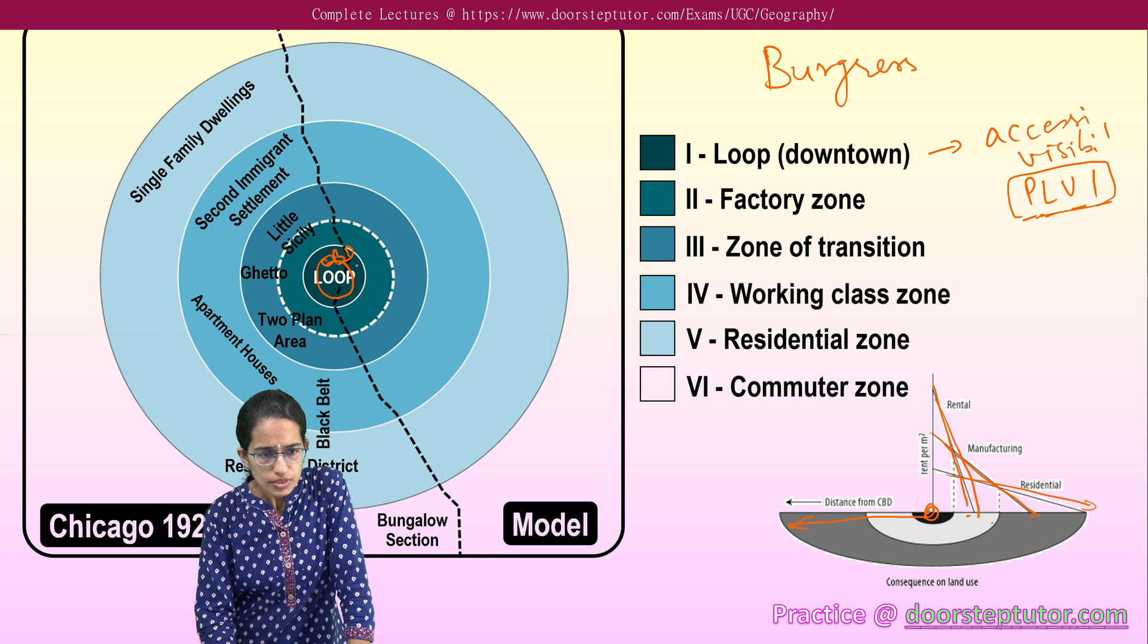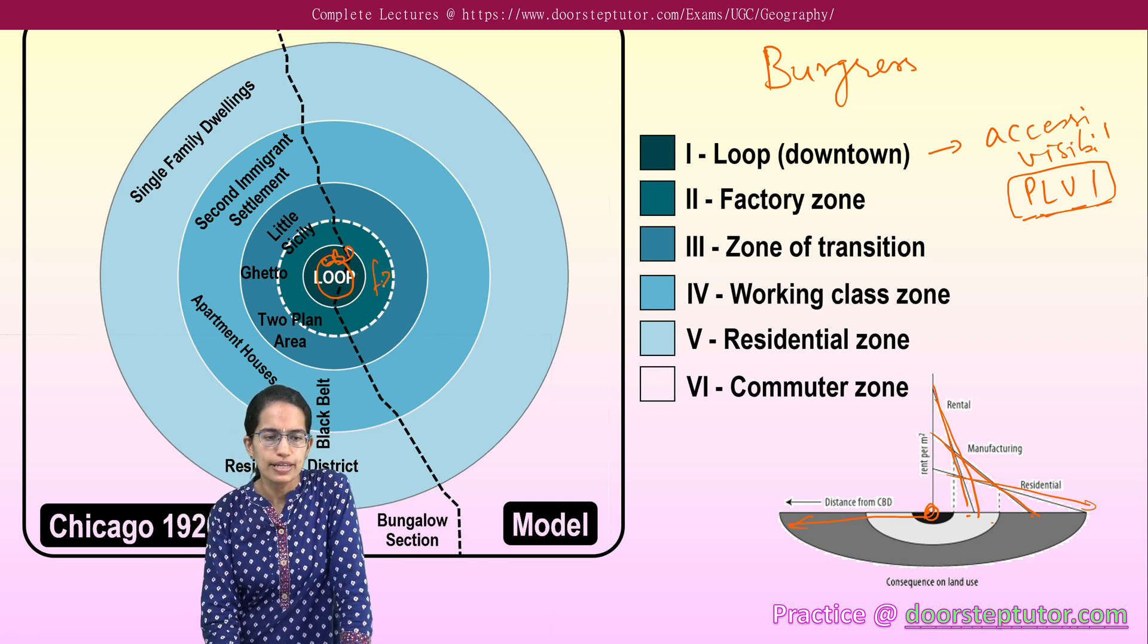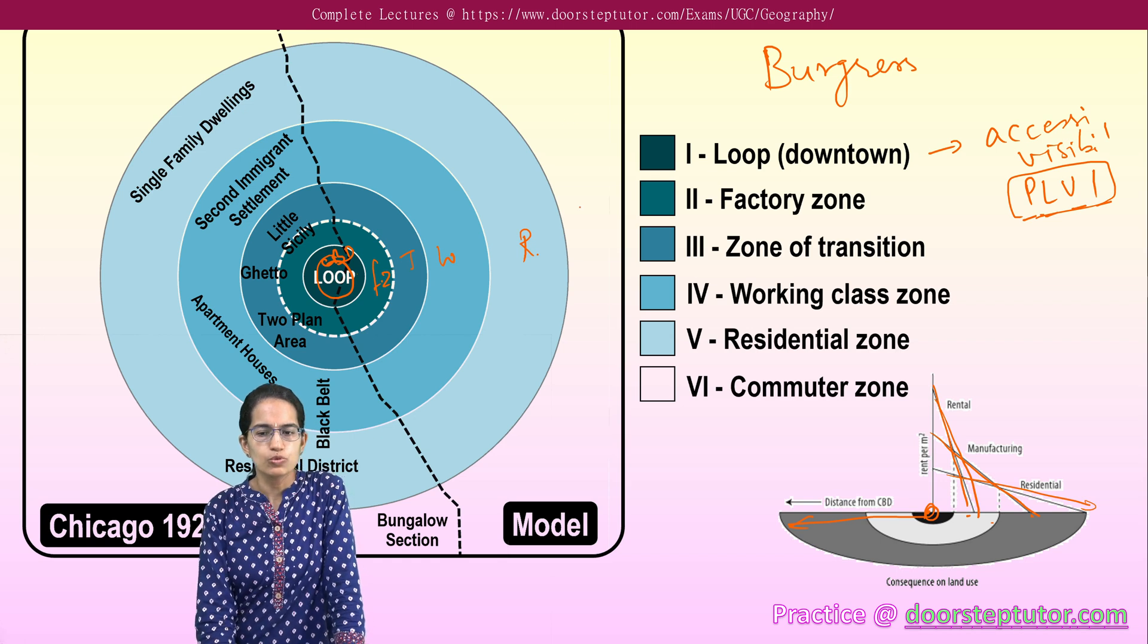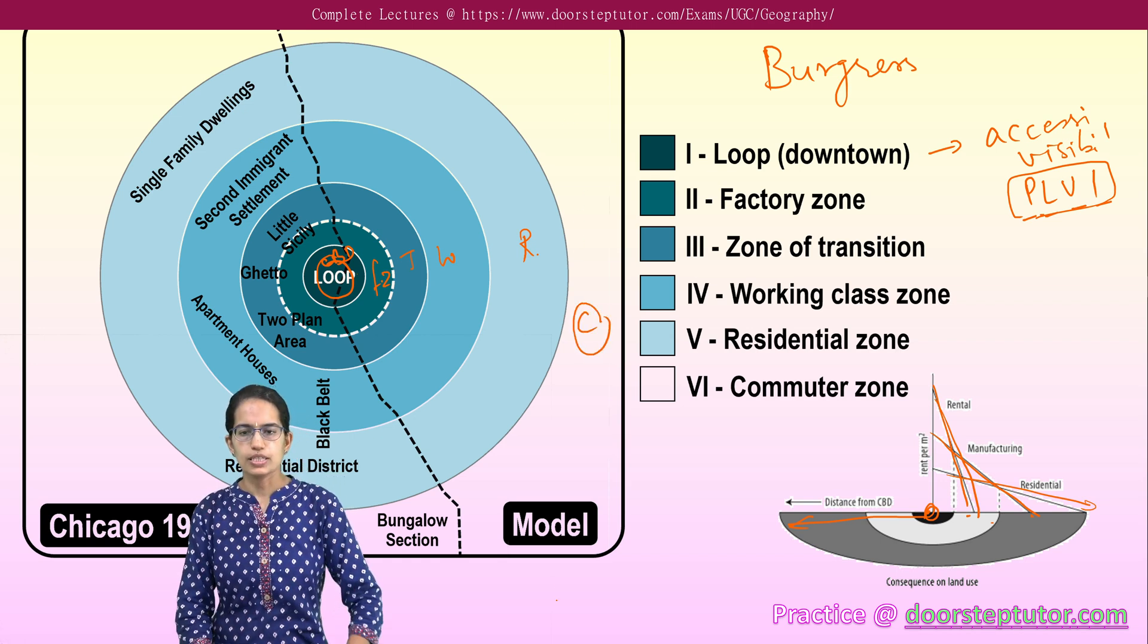The innermost is the central business district followed by the factory zone, the zone of transition, the working class population, the residential zone which is seen and finally outside is the zone of commuting population.